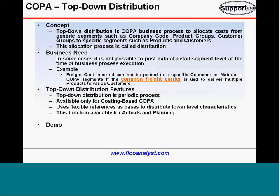Basically, concept-wise it's very simple. Top-down distribution is the SAP COPA business process to allocate costs from generic segments such as company code, product groups, or customer groups to specific segments such as individual products or customers. This process of allocation is called distribution — you are distributing the value.